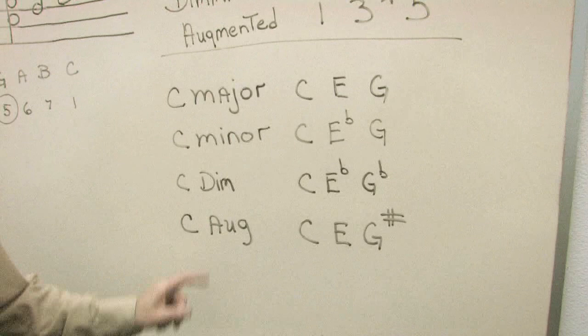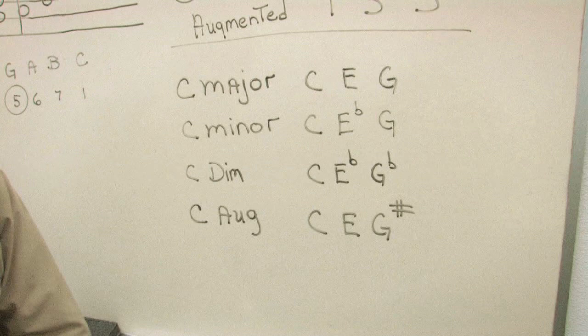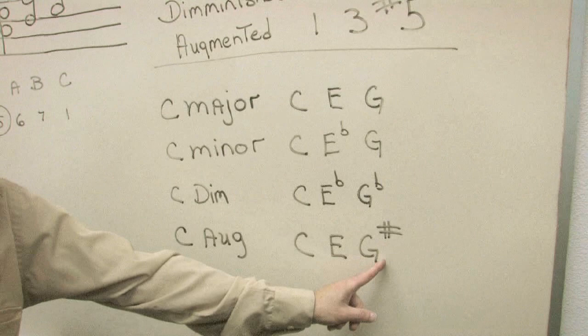To make it diminished, it will be C, E flat, G flat. And the last triad, augmented, will be C, E, G sharp.